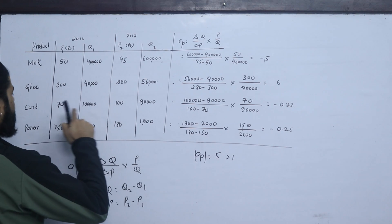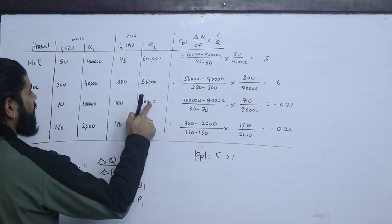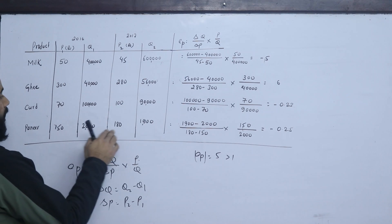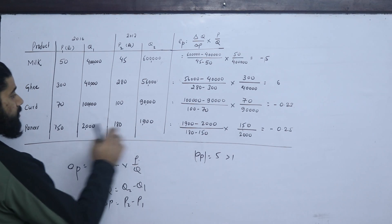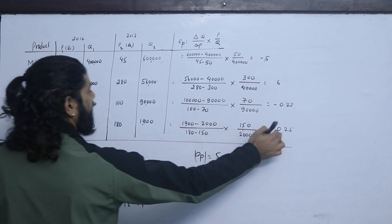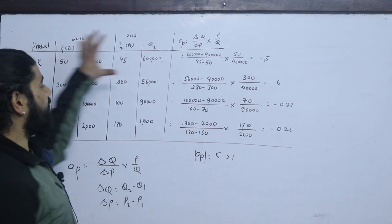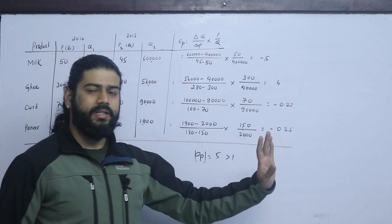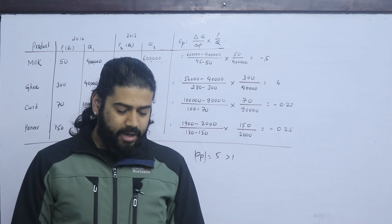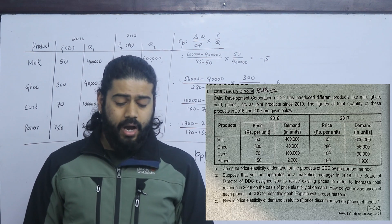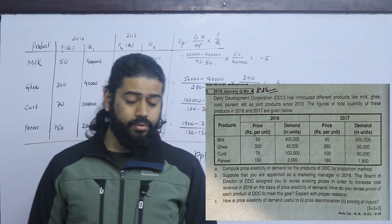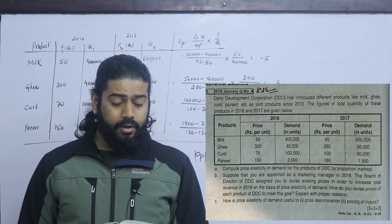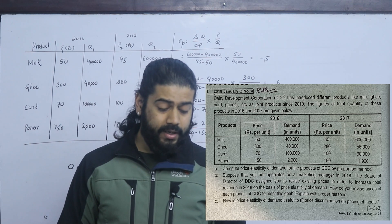Continuing calculations for other products: For curd, ΔQ = 56,000 − 40,000, ΔP = 280 − 300, initial P = 300 upon Q = 40,000. For paneer, ΔQ = 90,000 − 1 lakh, ΔP = 100 − 70, initial P = 70 upon 1 lakh. These give their respective elasticity values. If you are appointed as marketing manager in 2018, the board of DDC assigns you to revise existing prices to increase total revenue, based on price elasticity of demand.